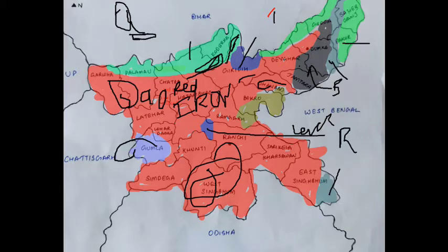It has kaolin, potassium, and iron oxide. This soil also contains lime, magnesium, and aluminum in adequate amounts.